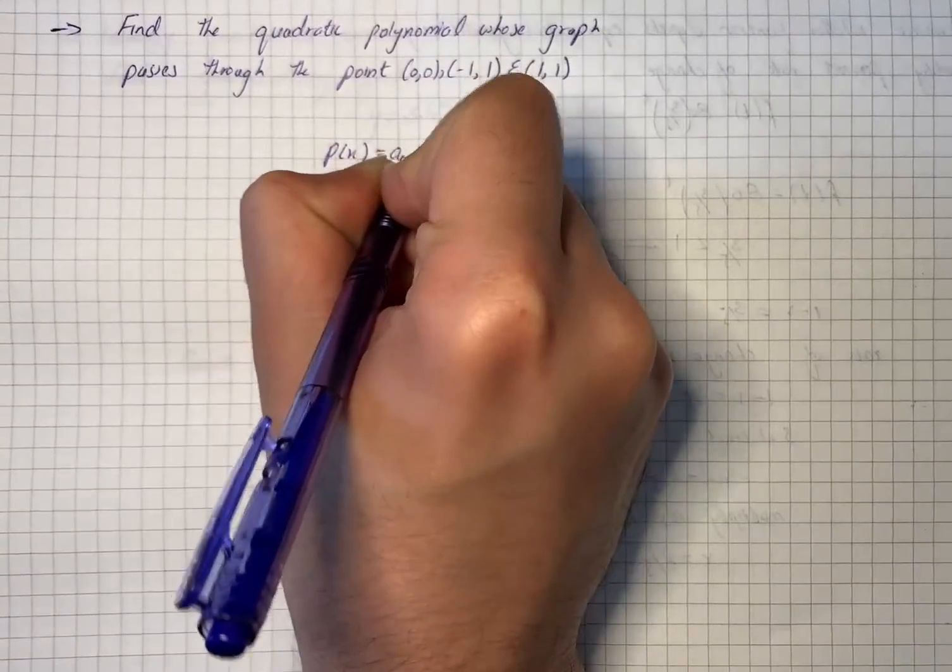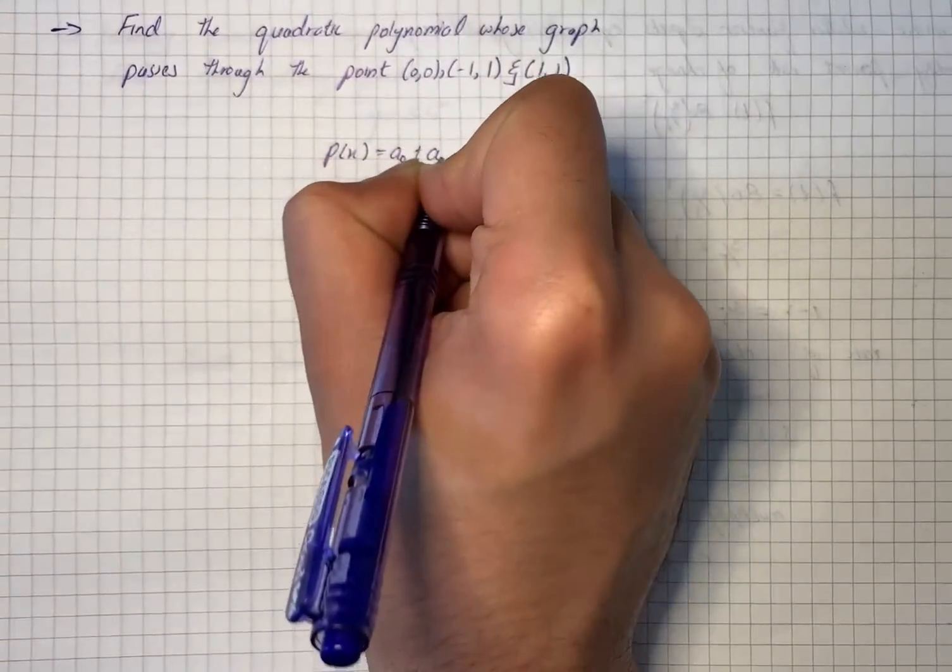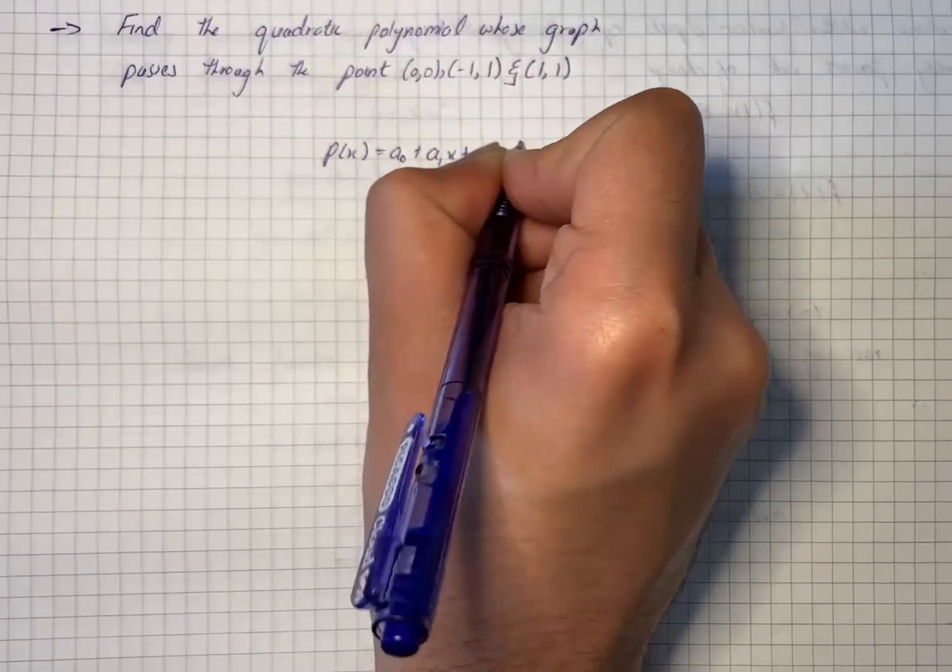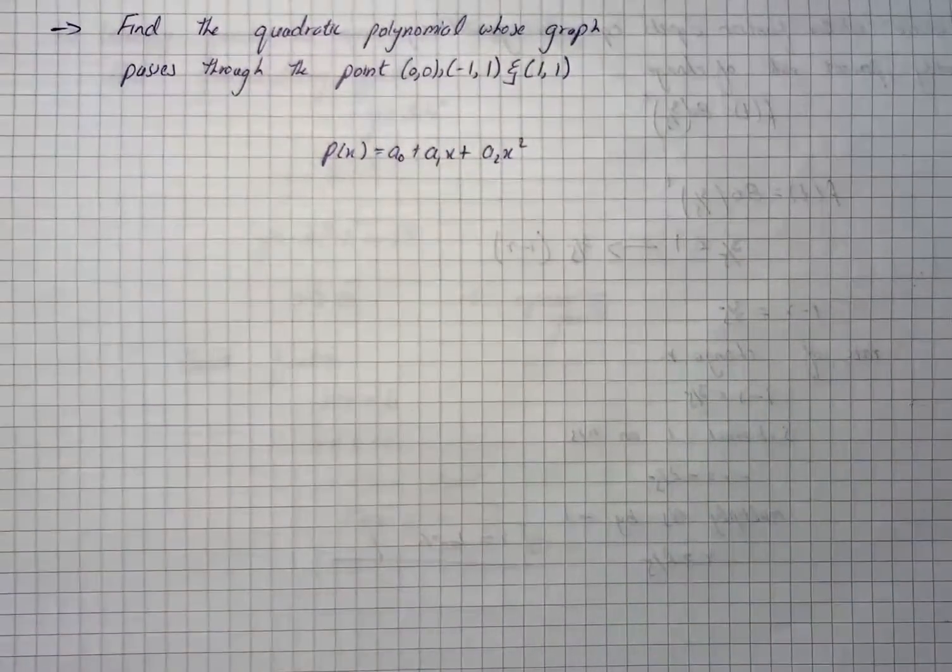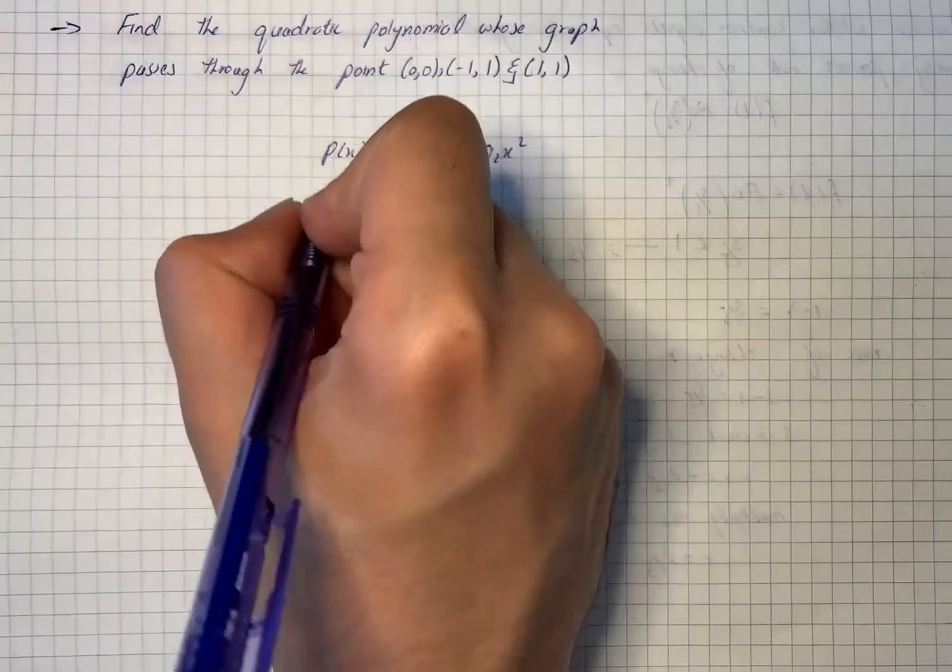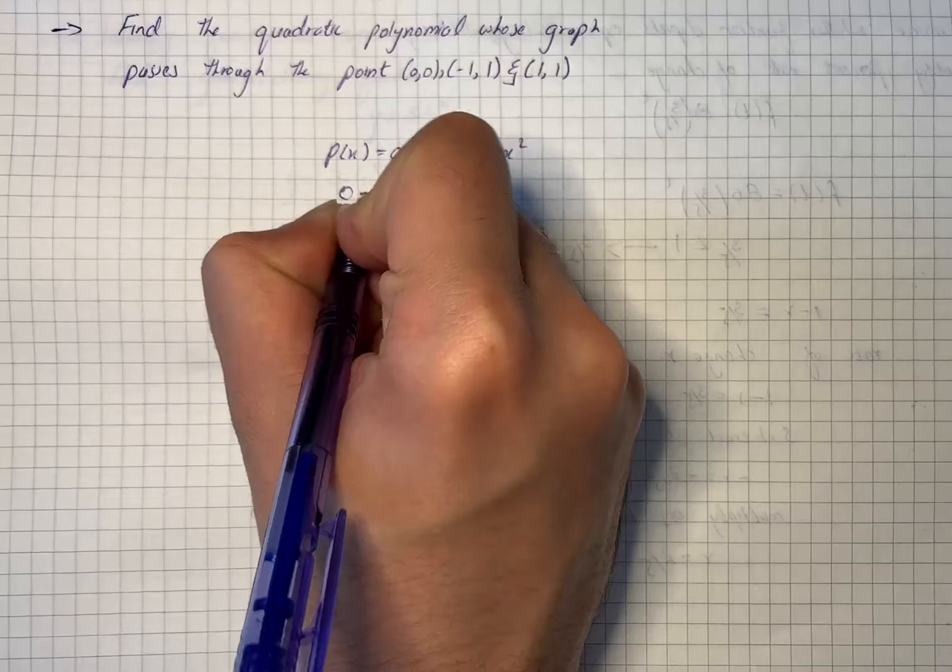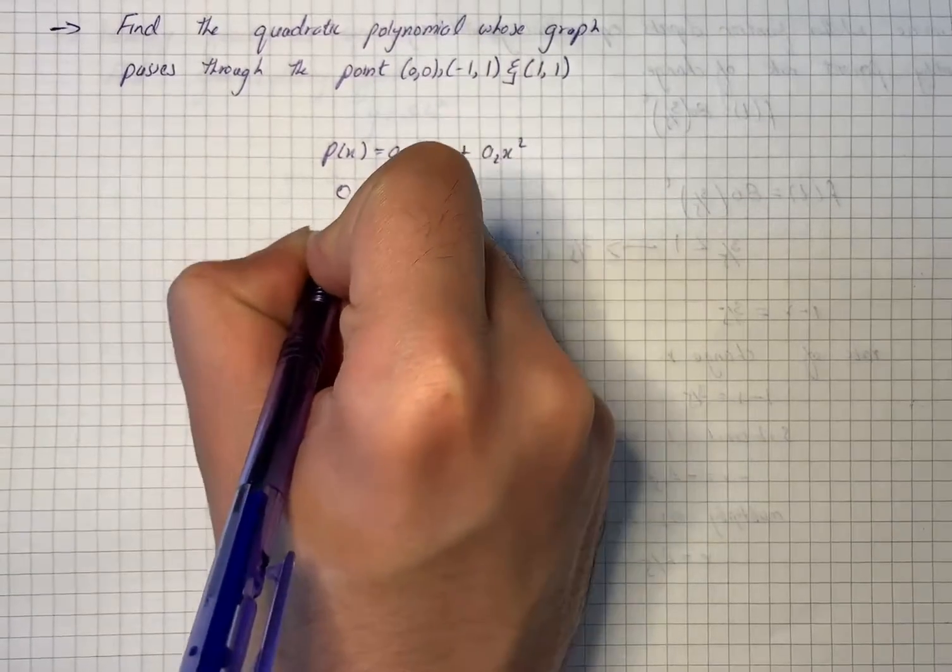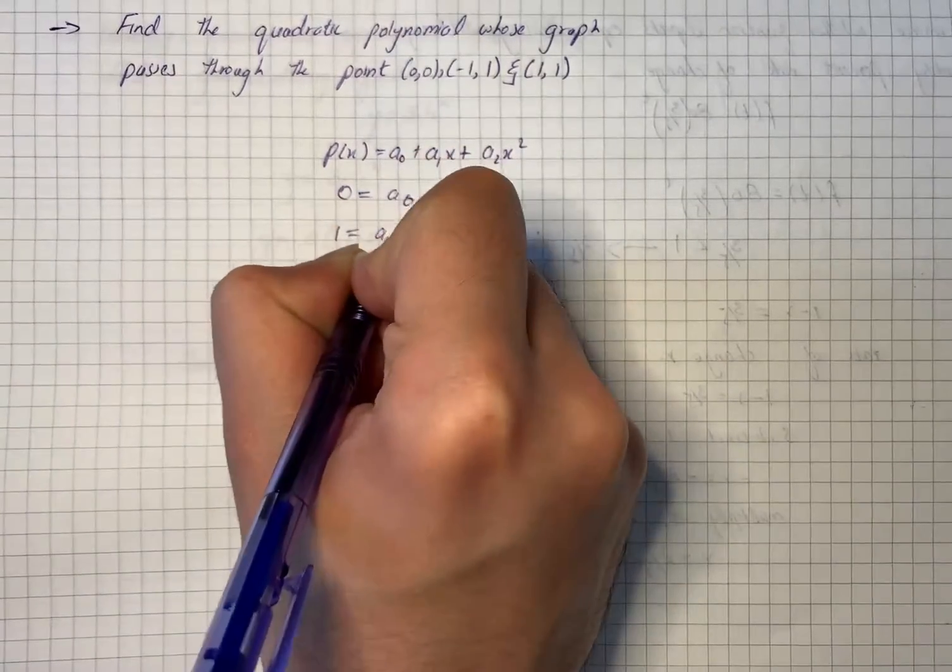p(x) equals a0 plus a1*x plus a2*x^2. Now we will substitute the given points in the equation for the polynomial.